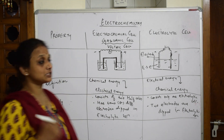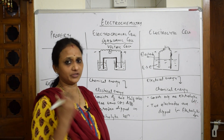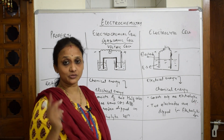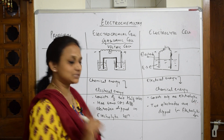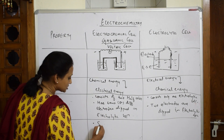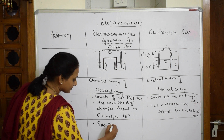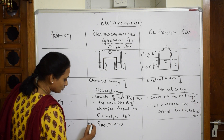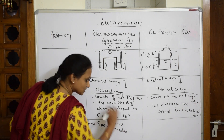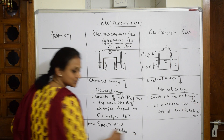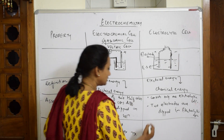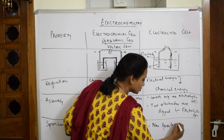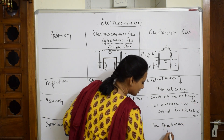Regarding spontaneity: in electrochemical cells, the redox reactions are spontaneous — there is an immediate transfer of electrons from anode to cathode. Electrochemical cells show spontaneous redox reactions, where both oxidation and reduction occur in the cell. In electrolytic cells, the redox reactions are non-spontaneous.